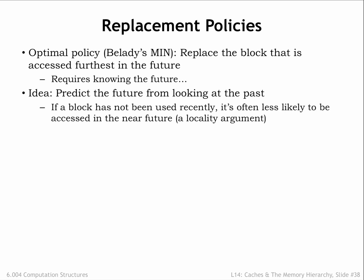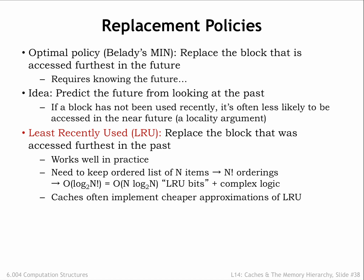Here's an idea: let's predict future accesses by looking at recent accesses and applying the principle of locality. If a block has not been recently accessed, it's less likely to be accessed in the near future. That suggests the least recently used replacement strategy, usually referred to as LRU — replace the block that was accessed furthest in the past. LRU works well in practice, but requires us to keep a list ordered by last use for each set of cache lines, which would need to be updated on each cache access. When we need to choose which member of a set to replace, we'd choose the last cache line on this list.